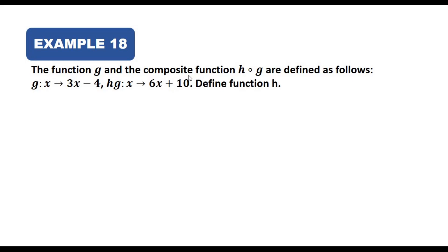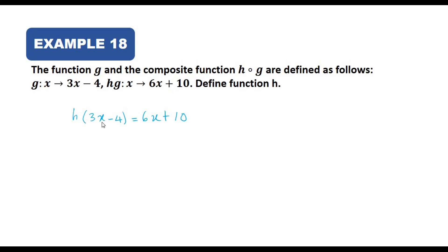Example 18: the functions g and the composite function h∘g are defined as follows — g(x) = 3x − 4 and h(g(x)) = 6x + 10. We want to find h. We start from h(g(x)) = 6x + 10, and substitute g(x) = 3x − 4, giving h(3x − 4) = 6x + 10.